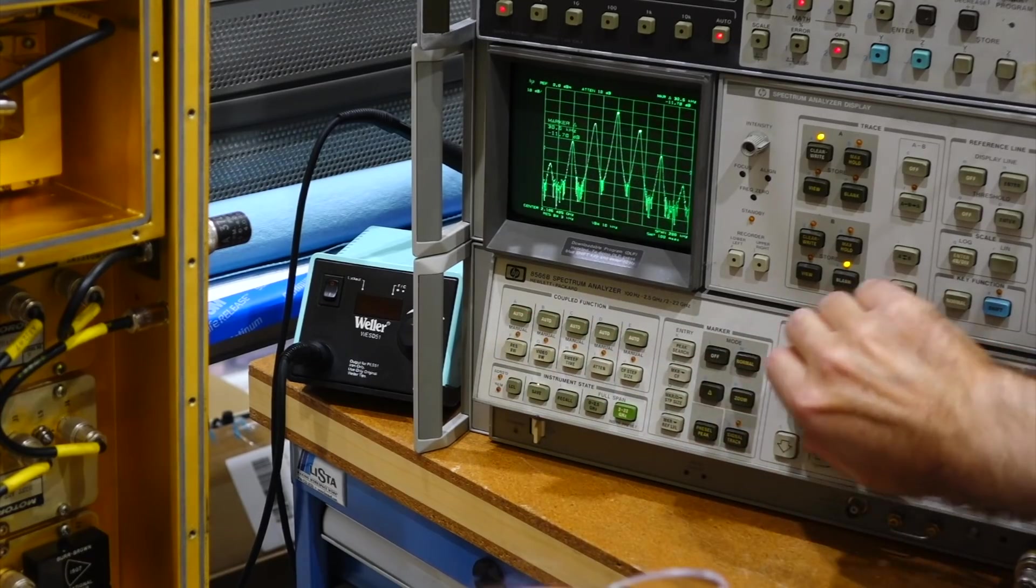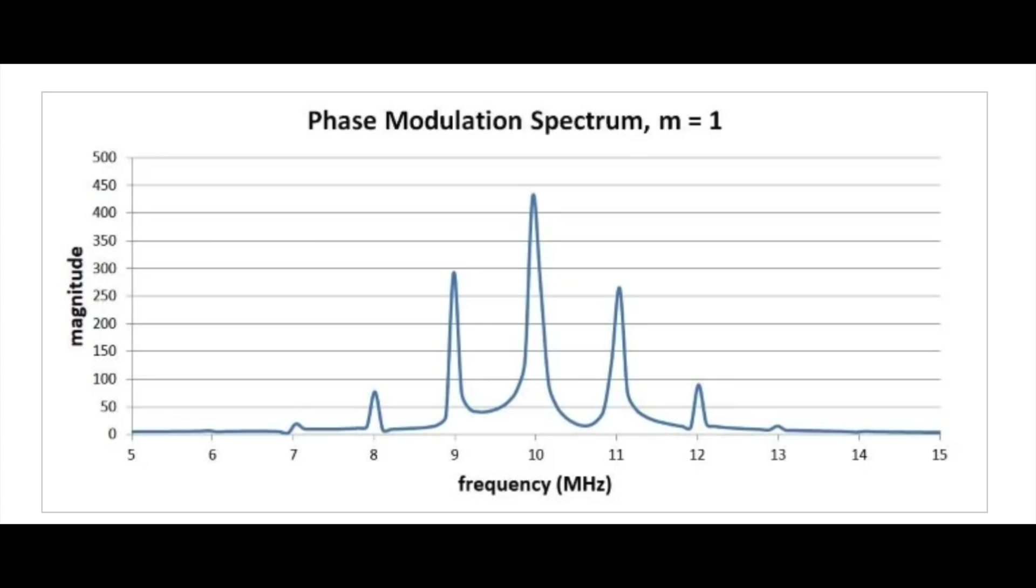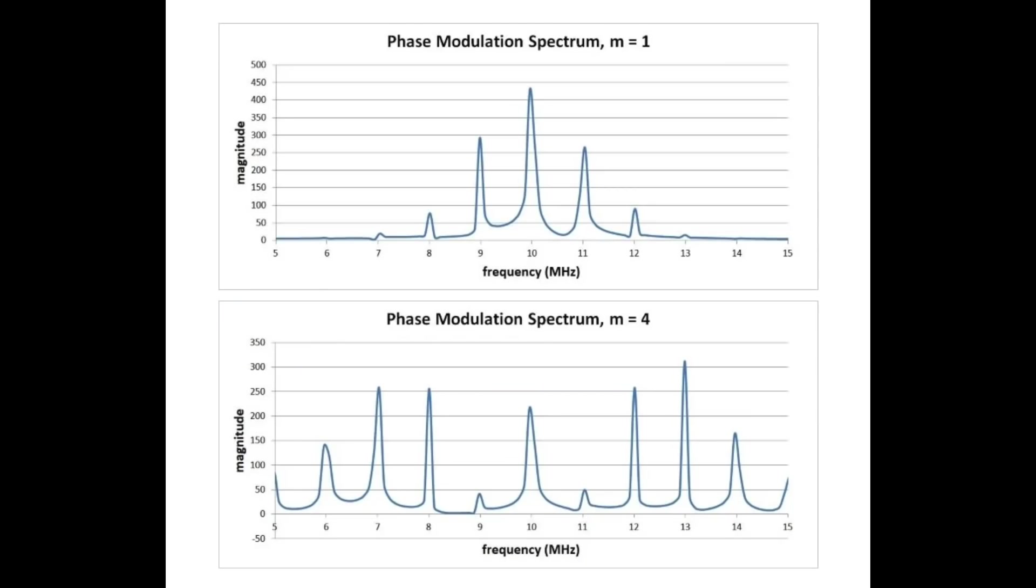But not so when you do phase modulation. In PM, you don't multiply two sines. You take the sine of a sine. And it's completely different. Here we are not so lucky, there is no simple analytical formula for the result. In practice, it generates a series of sidebands. The PM spectrum then looks like this.